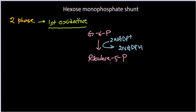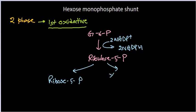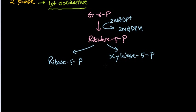Once ribulose 5-phosphate is produced, it is a very versatile element because we can convert it into many different varieties of 5-carbon molecules. For example, we can change ribulose 5-phosphate into ribose 5-phosphate, or produce xylulose 5-phosphate. Ribose sugar is necessary for creating the backbone of DNA. All of them are 5-carbon molecules — just a simple rearrangement in the carbon backbone. Everything up to this point is the oxidative phase, or first phase, of the hexose monophosphate shunt.